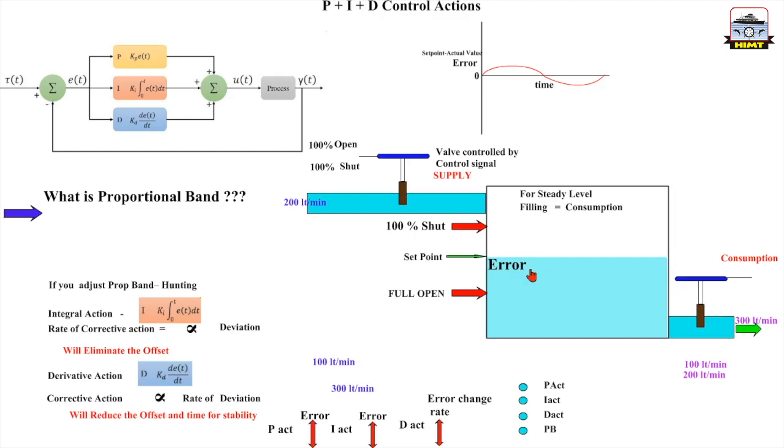Let us summarize the whole thing. Depending on the error and the relationship between the error and the opening of this valve, there are three types of action. One is the proportional action. So the valve is going to be operated by the proportional action which is going to depend on the error.